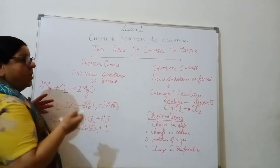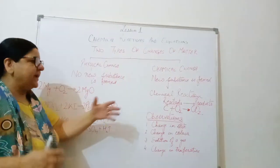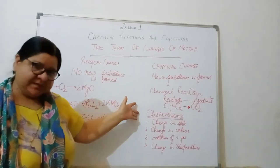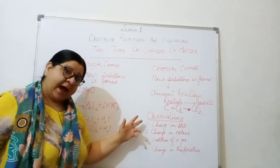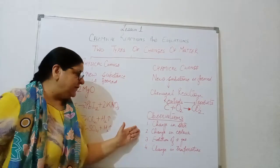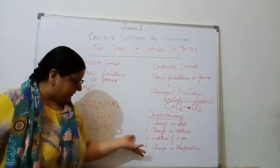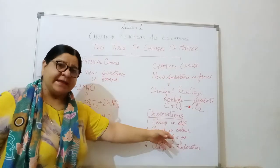Now, how can we come to know that a reaction has taken place? For that, there are a few observations. So these observations are first, either there is a change in state or there is change in color, change in the temperature or there may be evolution of a gas.